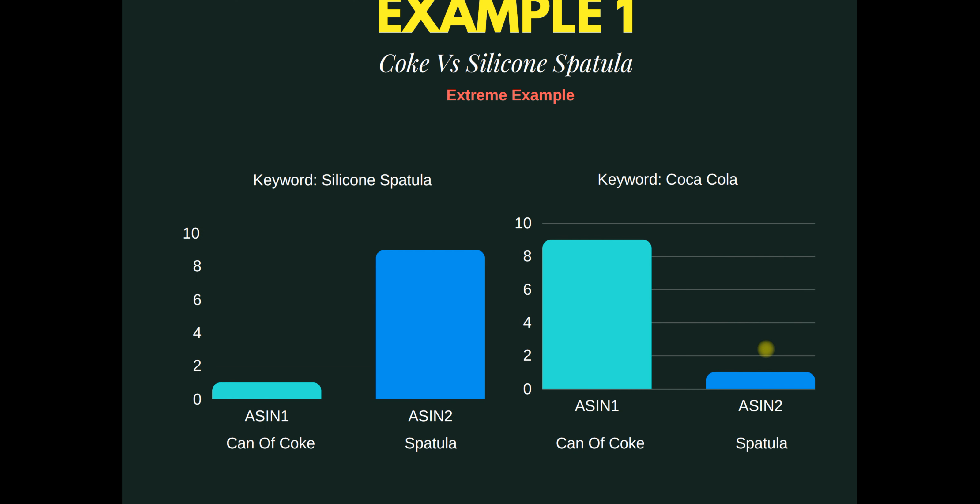Our first example is Coke versus silicone spatula. The two products could not be more dissimilar. The keyword a customer is searching is 'silicone spatula.' The first ASIN is a can of Coke and the second is a spatula. Since our spatula is very relevant to 'silicone spatula,' Amazon will give it a ton of traffic. Now, Coca-Cola is a huge keyword — it gets millions of impressions on Amazon every single month. Just because you put Coca-Cola in the back end of your keywords doesn't mean you'll suddenly get millions of impressions, because Amazon knows that you sell a spatula.